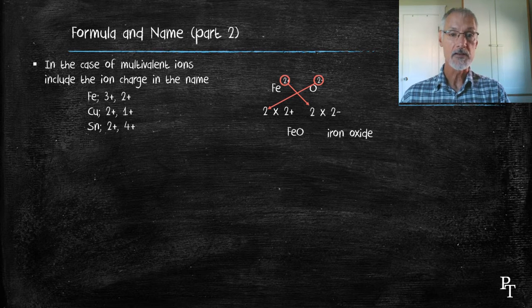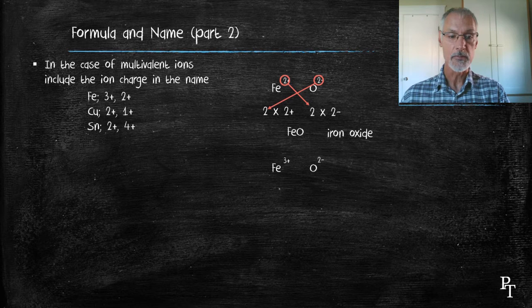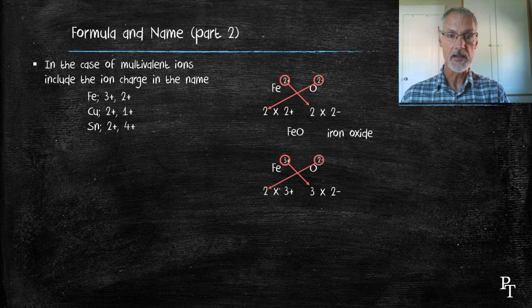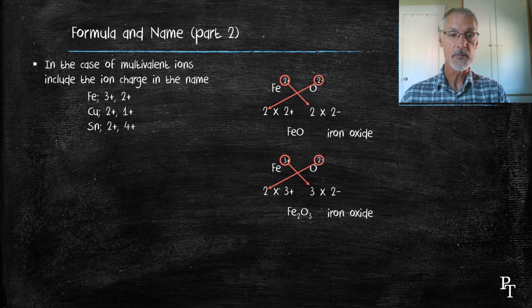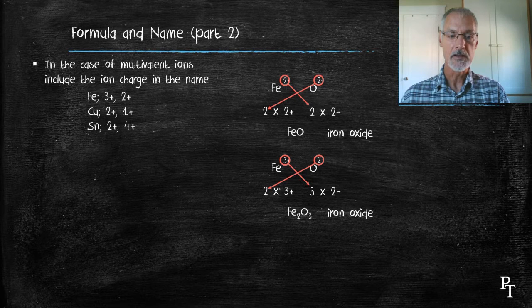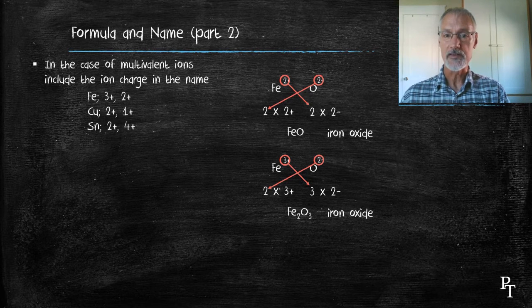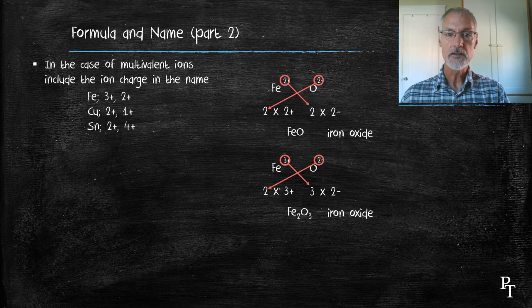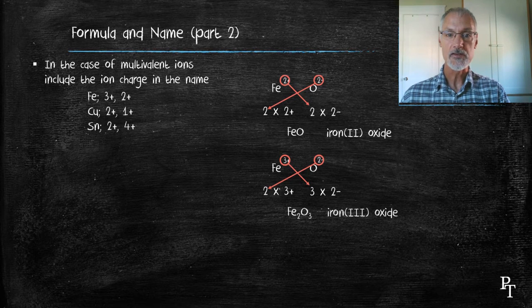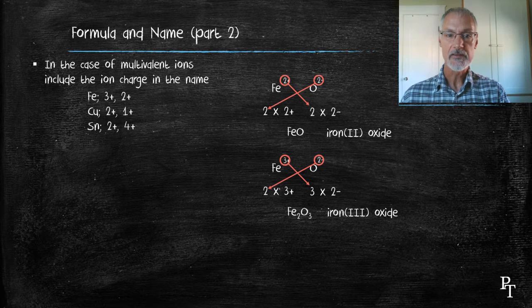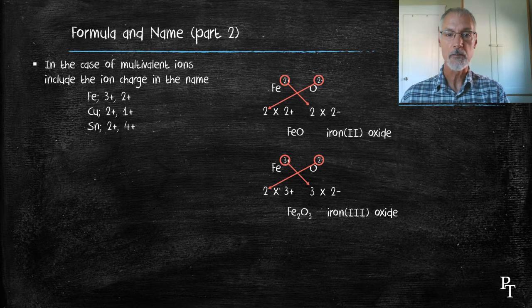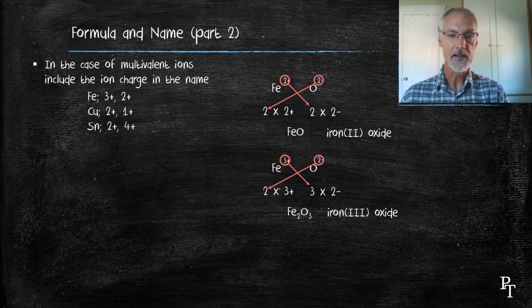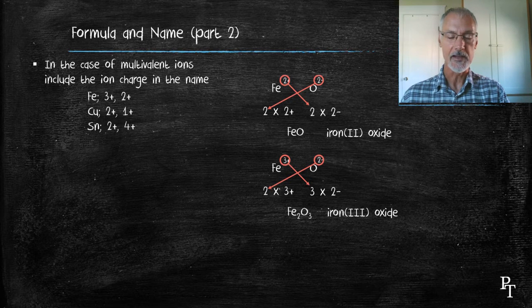If however, iron takes on the three plus charge, and we apply the crisscross rule to balance the charges, the formula would be Fe2O3. Now, both these compounds can't share the same name because they have different properties. To differentiate, we include in the name the charge that's being used in that species. So here you can see in brackets the first compound would be called iron(II) oxide and the second iron(III) oxide.